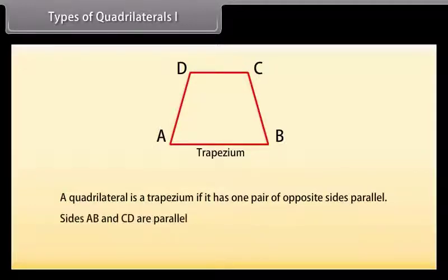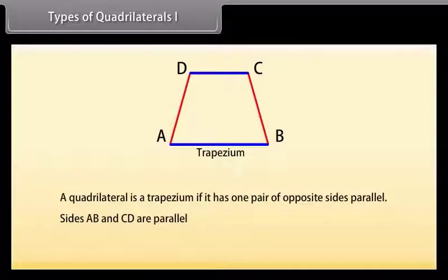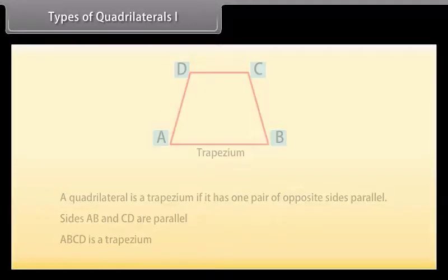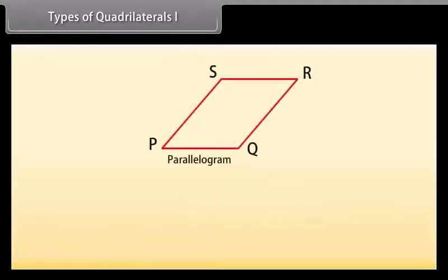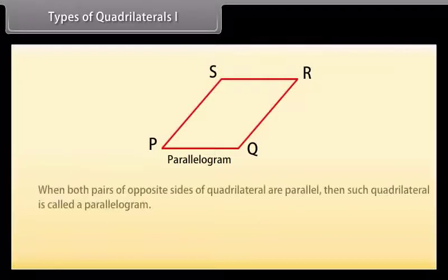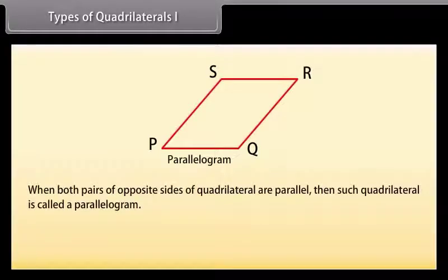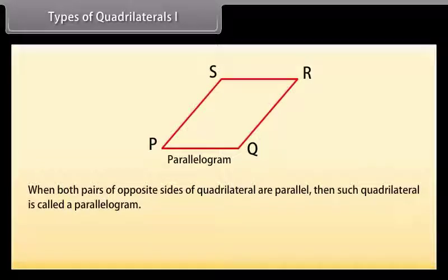In the figure, opposite sides AB and CD are parallel, so ABCD is a trapezium. Next is parallelogram. When both pairs of opposite sides of a quadrilateral are parallel, then such a quadrilateral is called a parallelogram.